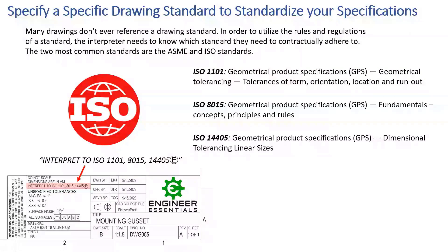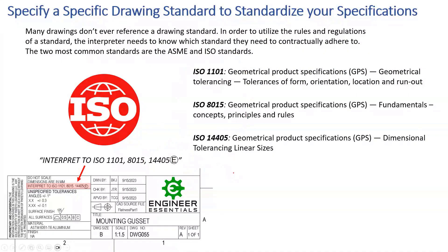ISO 14405 covers tolerancing of linear sizes. It's usually paired with the envelope symbol. For those familiar with ASME's Rule #1, the ISO equivalent is called the envelope principle — it's not applied by default in ISO. Because it's such a fundamental rule, many ISO drawings blanket-apply it using 14405 with the 'E' symbol, meaning the envelope principle applies to every size dimension by default. If you don't want it blanket-applied, you have to apply it selectively.